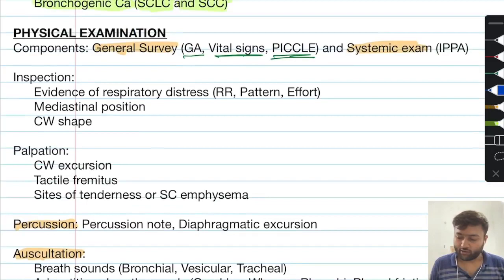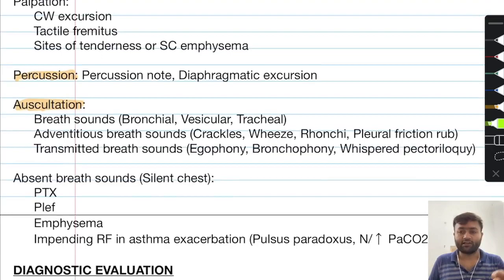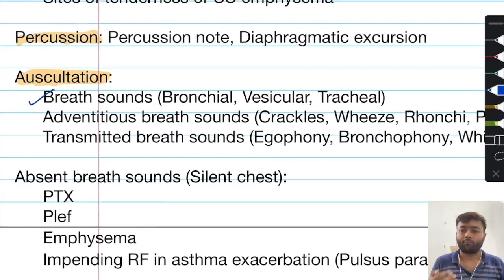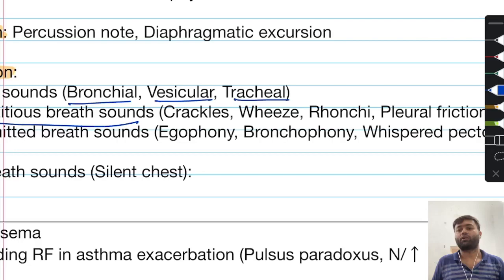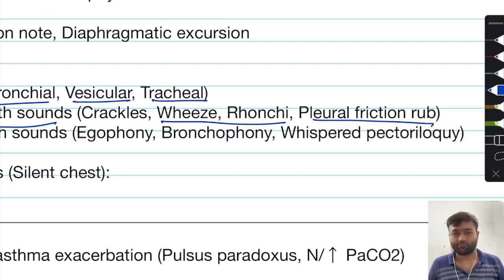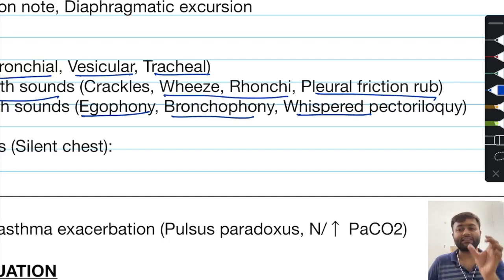If the patient is in obvious respiratory distress — using accessory muscles, with a markedly increased respiratory rate, increasing work of breathing, or decompensating — expedited management is necessary. In auscultation, there are three categories of breath sounds: normal breath sounds including bronchial, vesicular, and tracheal; adventitious breath sounds including crepitations or crackles (also referred to as rales), wheezes and rhonchi, and pleural friction rubs; and transmitted breath sounds including egophony, bronchophony, and whispered pectoriloquy.